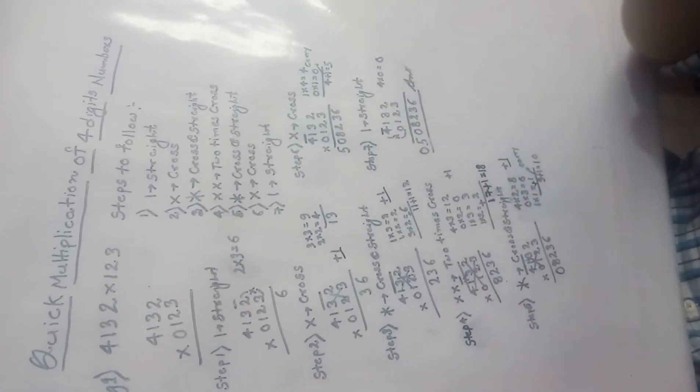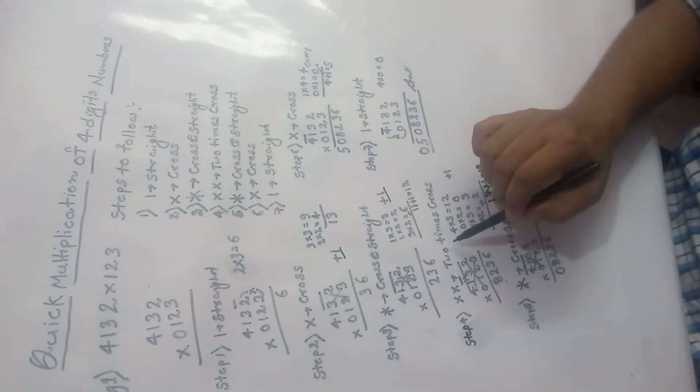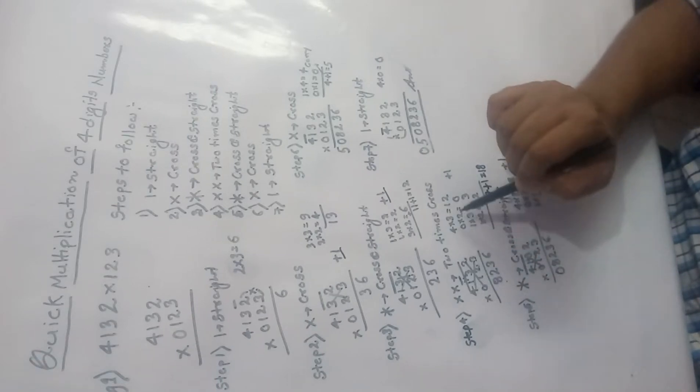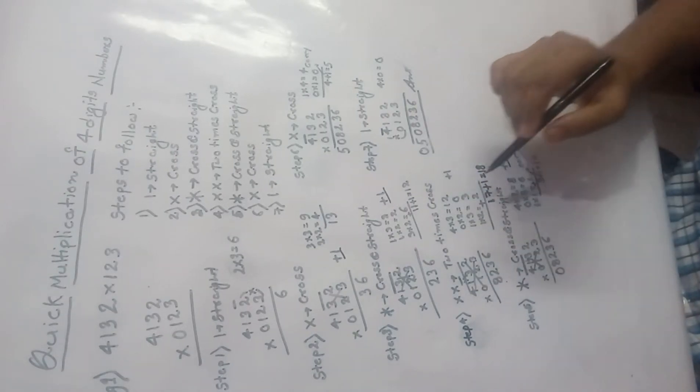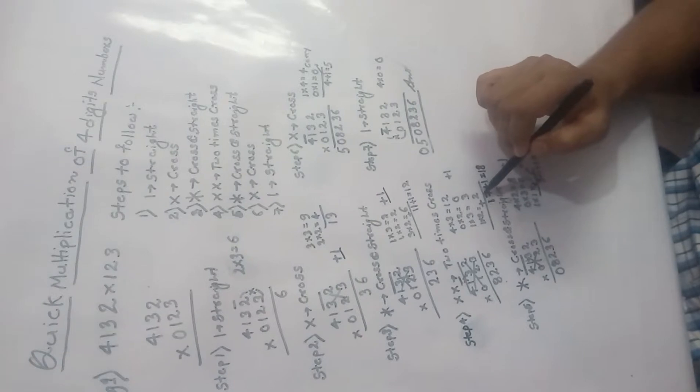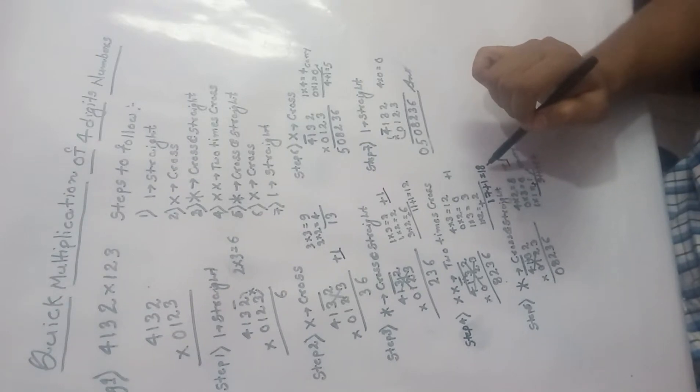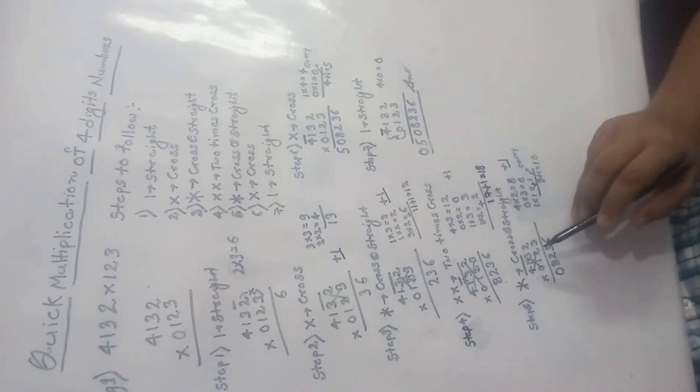So step 4 is 2 times cross multiplication, so 4 into 3 is 12, 0 into 2 is 0, 1 into 3 is 3, 1 into 2 is 2, adding all these numbers. So 12 plus 3 is 15, 15 plus 2 is 17, plus 1 from step 3, so 17 plus 1 is 18. 18, 8 again plus 1 is carry. Step 6.